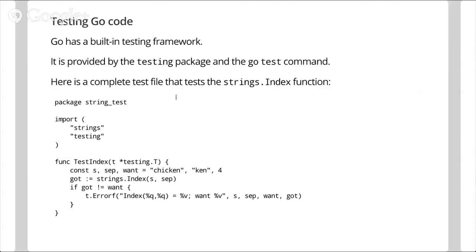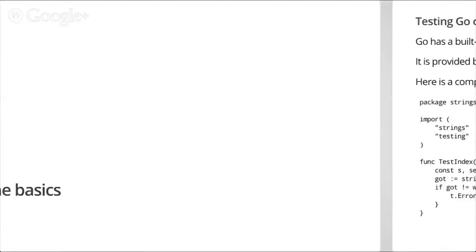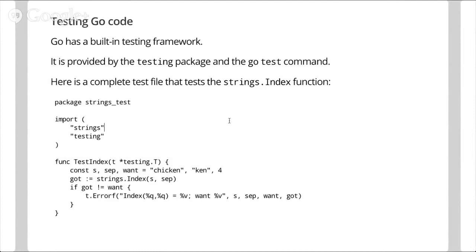This is a file called strings_test.go — a cut-down version of a test from the strings package in the standard library. In this file, we have a function called TestIndex — capital T, capital I — and it takes a testing.T argument, which is a test helper.